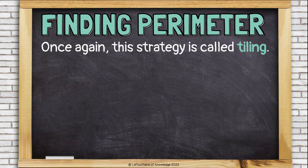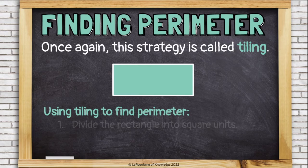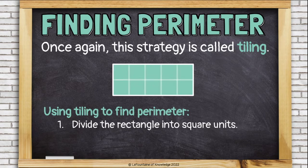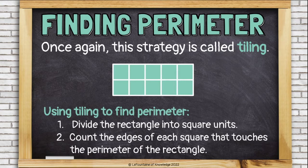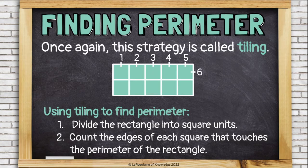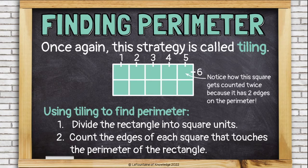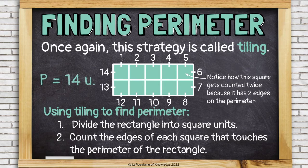This strategy of dividing the shape into squares is called tiling. Let's use tiling to find the perimeter of this rectangle. Divide the rectangle into square units and count the edges of each square that touches the perimeter: 1, 2, 3, 4, 5, 6. Notice how this corner square gets counted twice because it has two edges on the perimeter. 7, 8, 9, 10, 11, 12, 13, 14. This rectangle has a perimeter of 14 units.